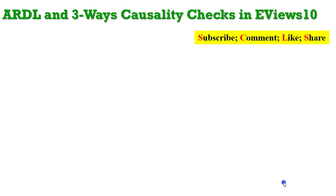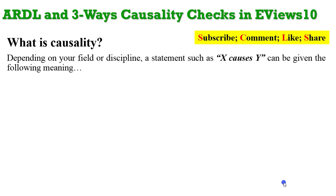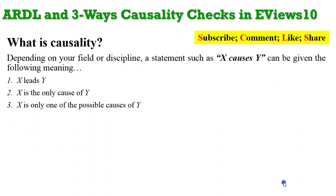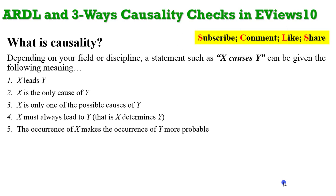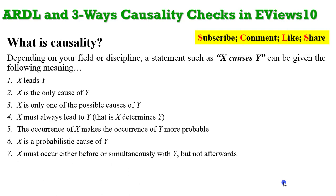So what exactly is causality? Depending on your field or discipline, a statement such as 'X causes Y' can be given any of the following meanings. You can say X leads to Y, or X is the only cause of Y, or X is only one of the possible causes of Y. X must always lead to Y — that is, X determines Y. The occurrence of X makes the occurrence of Y more probable, so X is a probabilistic cause of Y. X must occur either before or simultaneously with Y, but not afterwards. It can also mean that the past values of X forecast future values of Y.